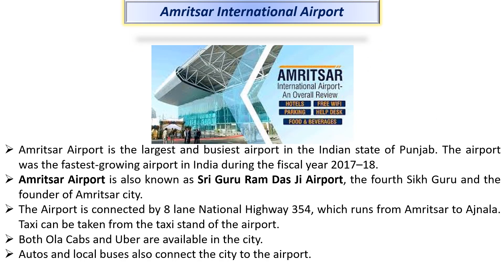As you can see on the screen, Amritsar international airport is the largest and the busiest airport in the Indian state of Punjab. Amritsar airport is also known as Shri Guru Ram Dass Ji airport, named after the fourth Sikh guru and the founder of Amritsar city. Both Ola cabs and Uber are available in the city, and the airport is connected by eight-lane national highway 354.